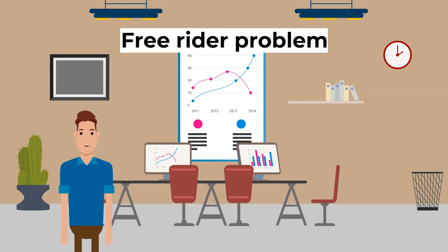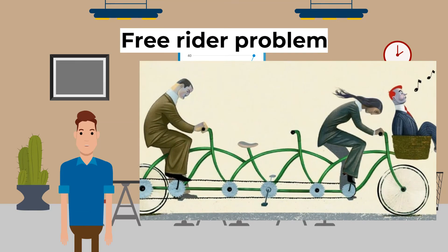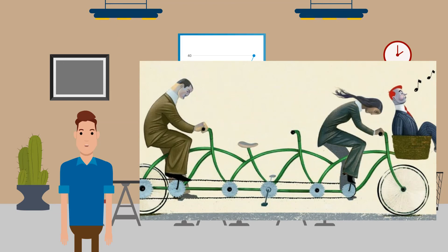That brings us to the free rider problem. This says that you cannot charge an individual a price for the provision of a non-excludable good because someone else will gain the benefit from it without paying anything. A free rider is someone who receives the benefits without paying for them. Private sector producers will not provide public goods because they cannot be sure of making a profit due to the non-excludability of public goods. Therefore, if provision of public goods was left to the market mechanism, the market would fail, and so they are provided by the government and financed through taxation.